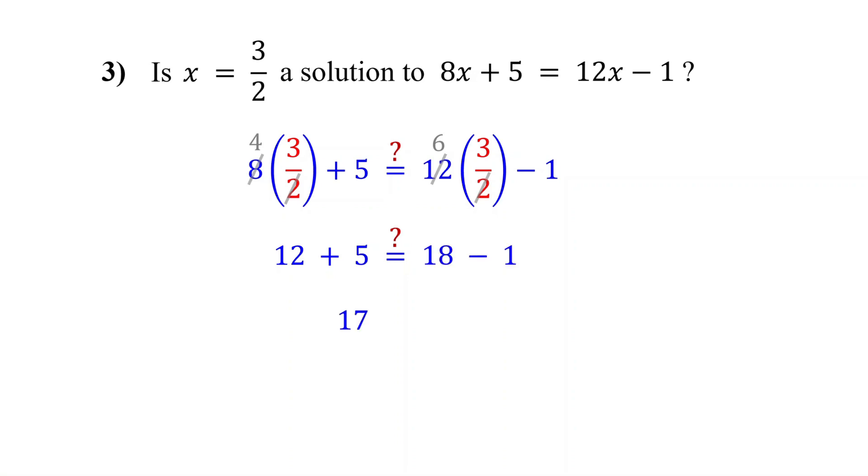Now 12 plus 5 is 17. And 18 minus 1 is also 17. Since both sides are equal, x equals 3 halves is a solution to the equation.